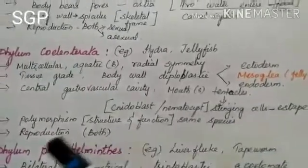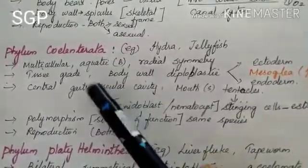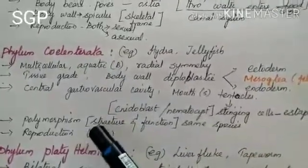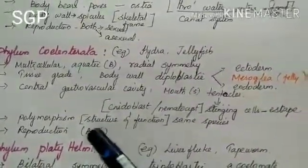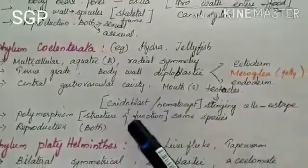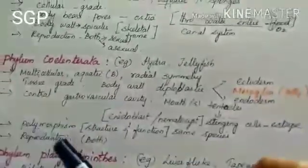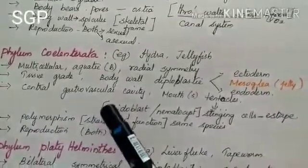These stinging cells help protect organisms from predators. Coelenterata also shows polymorphism — variation or differences in structure and function of the same species. Reproduction occurs by both sexual and asexual methods.